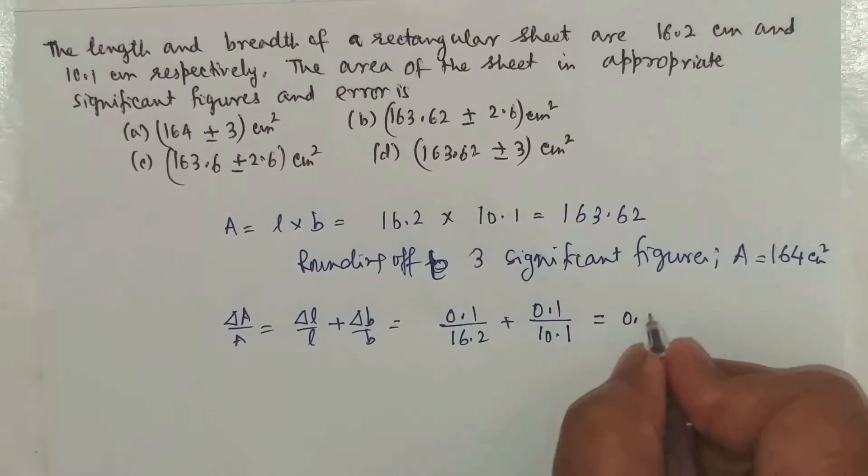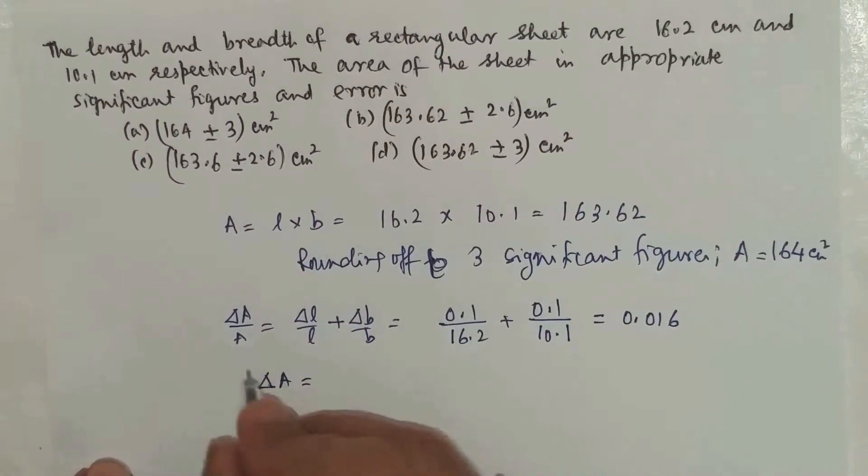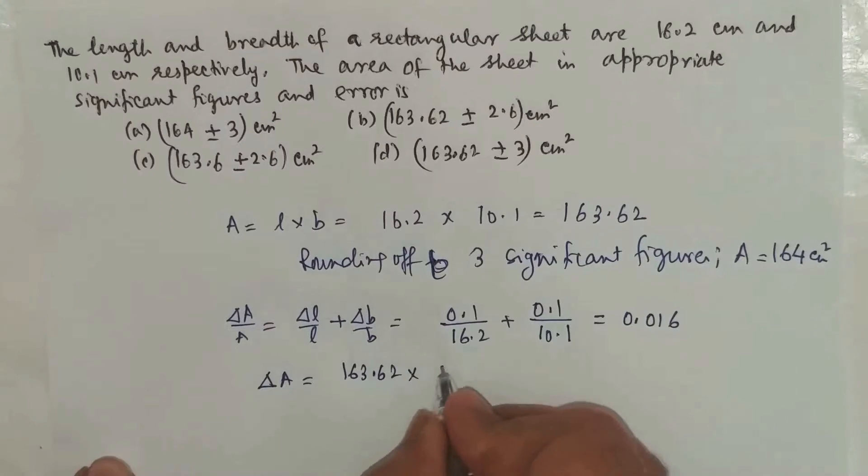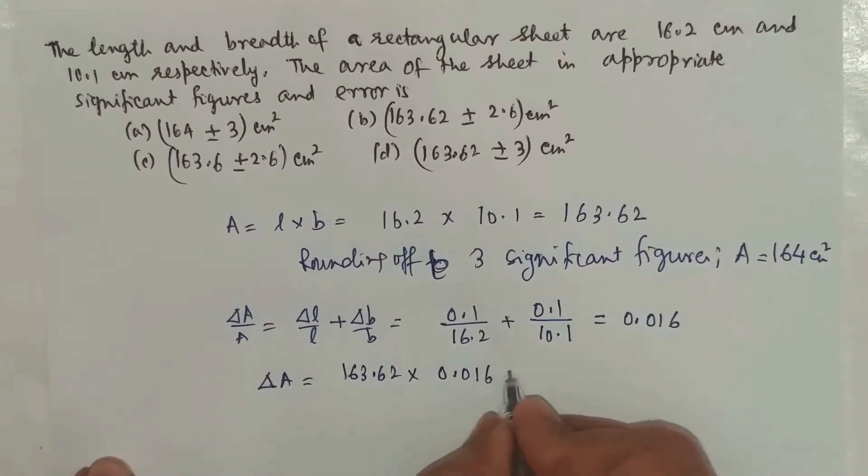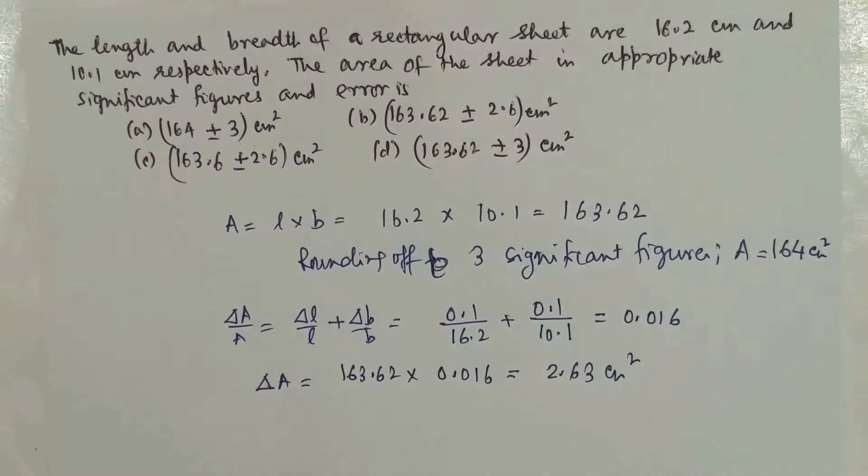Therefore, ΔA will be A multiplied by that: 163.62 multiplied by 0.016. It comes out to be 2.63 cm². Now look at the value that we require.